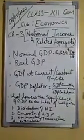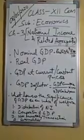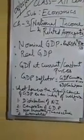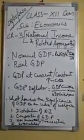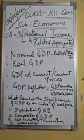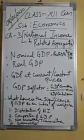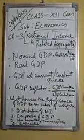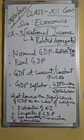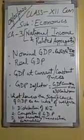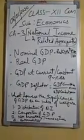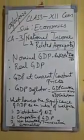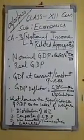GDP at current prices, also called monetary GDP or nominal GDP, refers to the market value of final goods and services produced within the domestic territory of a country during an accounting year, estimated using the current year prices. It may increase without any increase in the quantum of output in the economy.